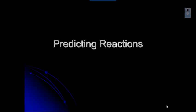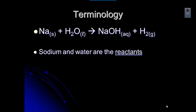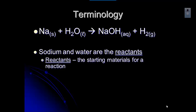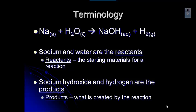Let's start by looking at what a reaction looks like when we write it and talk about some of the terminology. The items on the left — sodium and water — are the reactants. The reactants are the things that you start with to begin the reaction. Sodium hydroxide and hydrogen are the products — whatever is created by the reaction. Everything to the left of the arrow is a reactant; everything to the right of the arrow is a product.